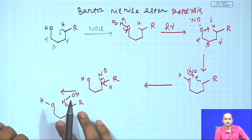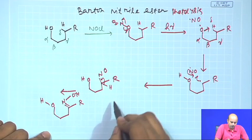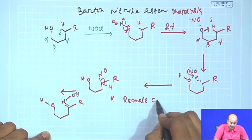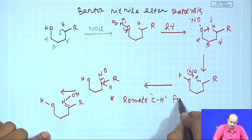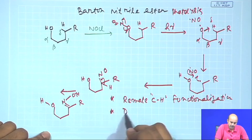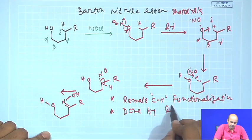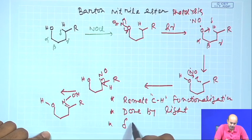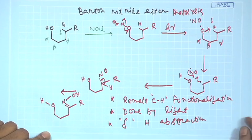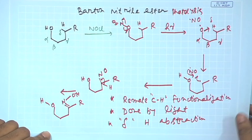So this is in a nutshell the Barton nitrile ester photolysis. The key feature is this is a remote C-H functionalization done by light, and normally delta hydrogen abstraction takes place. Now try to fit this into our model - we will be doing that now.